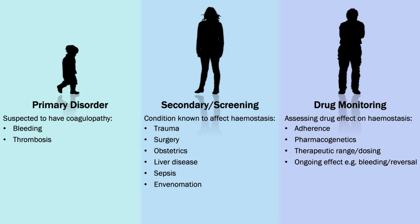A patient on dual antiplatelet therapy might have a relatively normal ROTEM trace, but a massively increased bleeding tendency. A major part of all of these assessments is history, both in choosing what tests to perform and interpreting the results. Conceptually placing the patient in one of these three categories might be a useful first step.